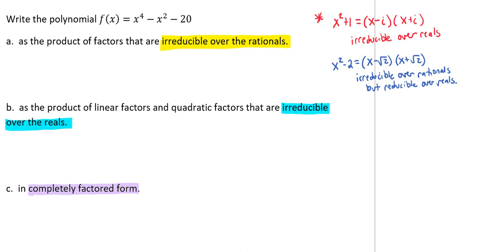So let's take a look at what we've got, and let's go through this so we can see how exactly that breaks down. We want to take a look at our x^4 - x^2 - 20.